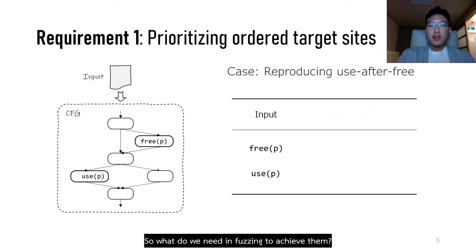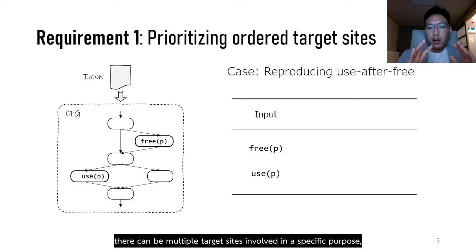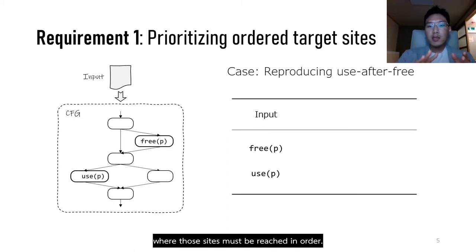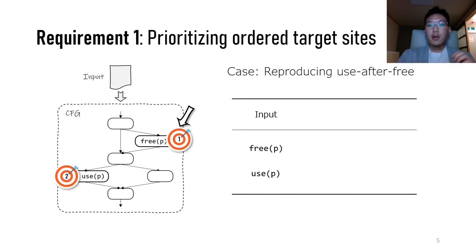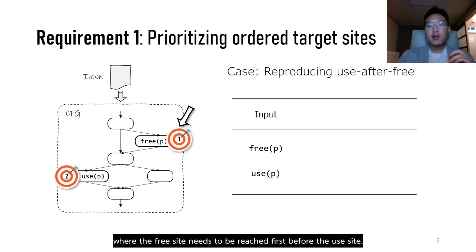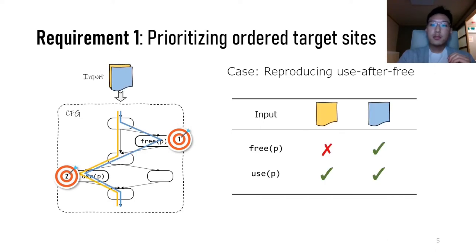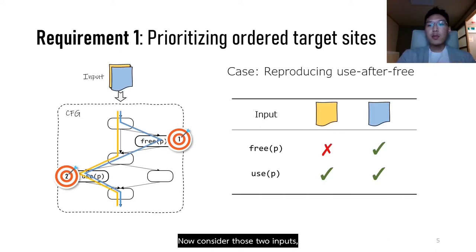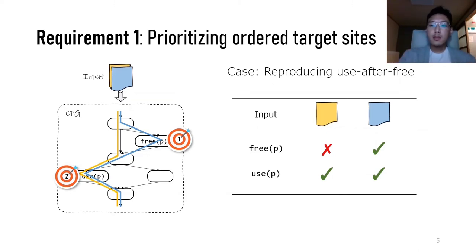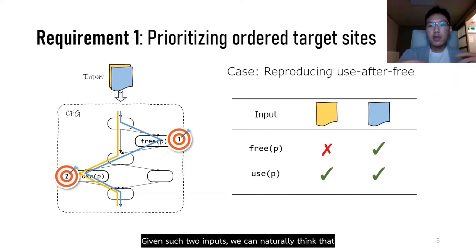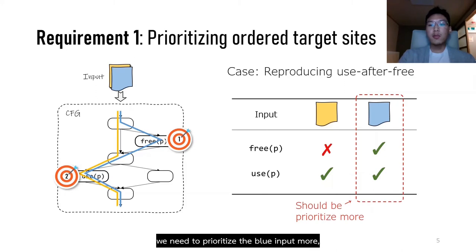So what do you need in fuzzing to achieve these goals? First, we need to clarify that there can be multiple target sites involved in a specific purpose, where those sites must be visited in order. For example, consider reproducing a use-after-free crash, where the free site needs to be reached first before the use site. Now consider two inputs: the yellow input reaches only the use site, while the blue input reaches the free site first and the use site later. We can naturally think that we need to prioritize the blue input more, because it at least frees the pointer before it is used.